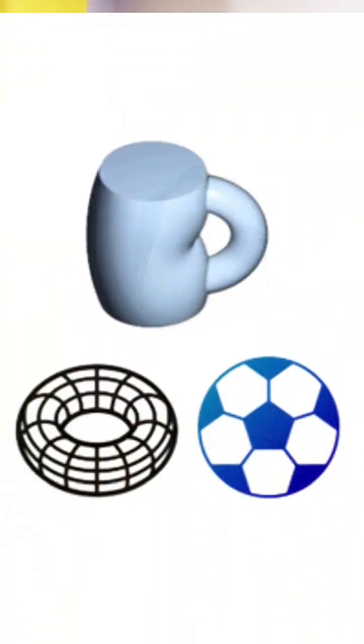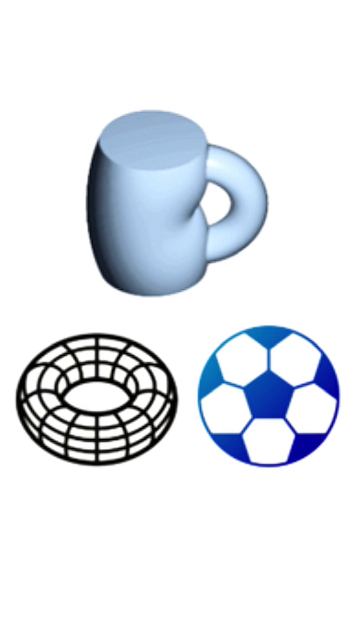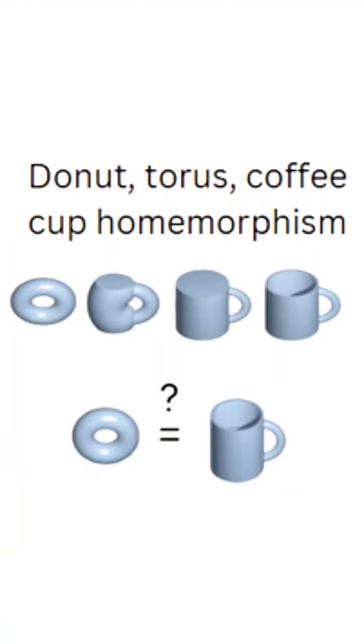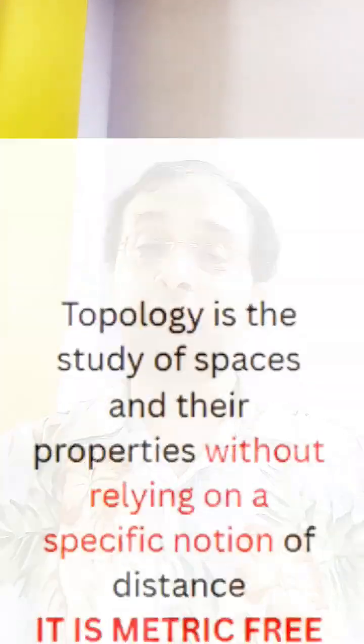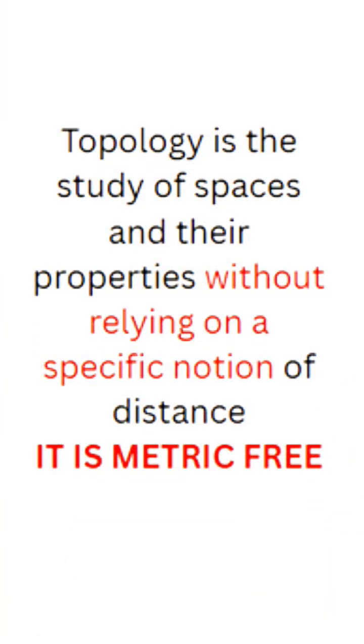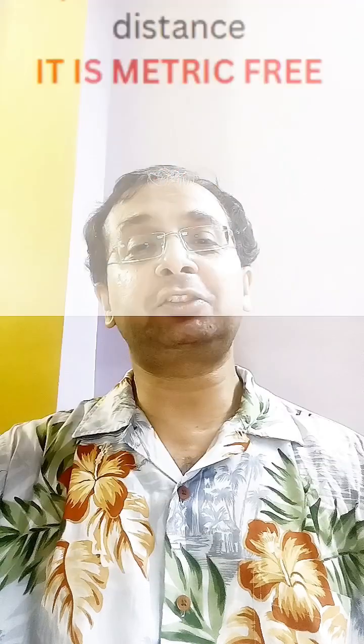A torus, a coffee cup, or a ball can be turned into weird shapes and these shapes can again turn back to what are called Euclidean structures. Topology does not deal with any kind of distance — there are no distances, rather there are neighborhoods. There is nothing called a metric; it becomes a metric-free space, so you move from Euclidean space to topological space.